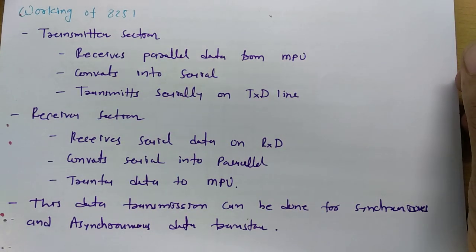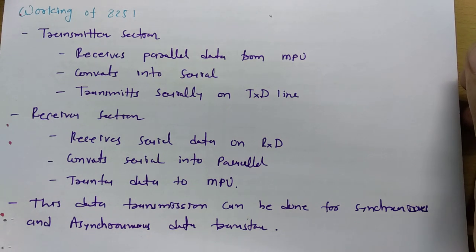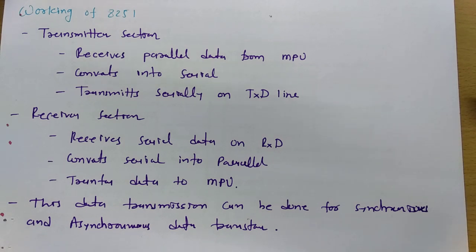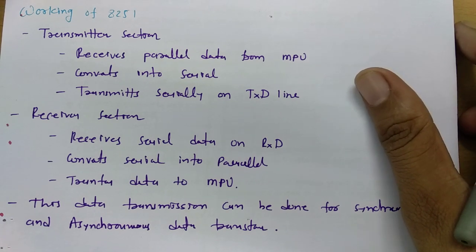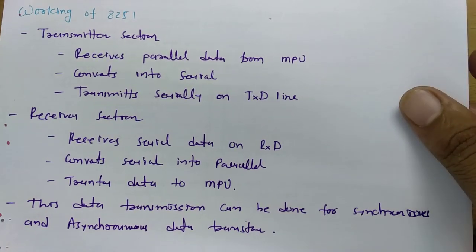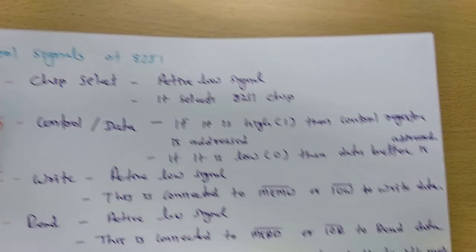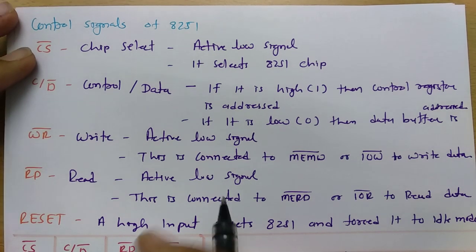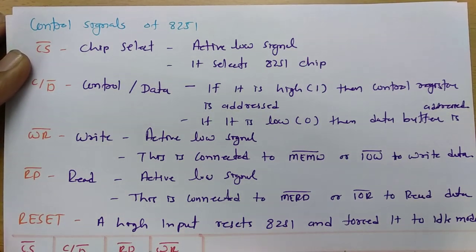By using the Programmable Communication Interface IC we can have serial data transmission and reception, and interface the parallel communication of the microprocessor to convert it into serial communication. This is the basic agenda of 8251. Now let us see the control signals in 8251 and then I will explain the block diagram.